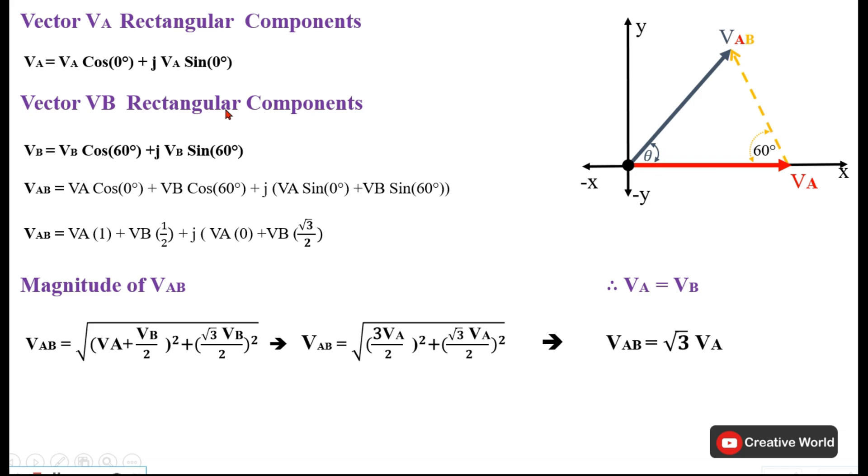Vector VA rectangular components are given here. We know that in order to find out the horizontal component of a vector, we take the cosine of the angle of that vector and multiply with its magnitude. Similarly, for the vertical component of that vector, we take the sine of that vector angle and multiply with its magnitude. Here we have found out the rectangular components of VA vector, which are given here: VA cos 0 degrees plus j VA sin 0 degrees.